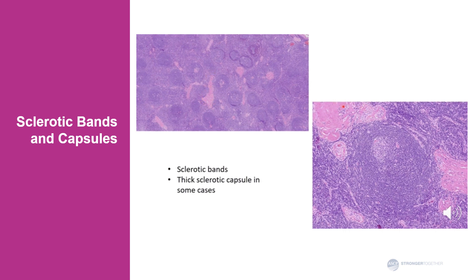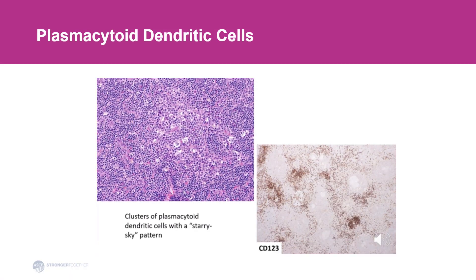This is a higher power of a sclerotic band. In some cases, we'll also have a thick capsule. An interesting and peculiar histologic finding seen in Castleman disease is clusters of plasmacytoid dendritic cells which have a starry sky appearance because they have interspersed paler cells, giving it a starry sky appearance. If you want to demonstrate plasmacytoid dendritic cells, you can stain with CD123, and you can see they are not only found in clusters but also interspersed in the interfollicular area and are definitely increased.